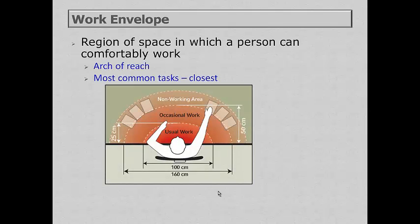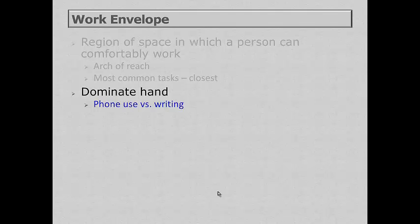Let's take a look at the work envelope — simply the region of space in which a person can comfortably work. Note that it's an arc of reach, not a rectangle or square. In general, put the most common tasks closest to the individual. Consider what the dominant hand is — for example, if a person uses a phone, they'd probably want to use it with their opposite hand so they can also perform writing tasks while on the phone. If the phone is on the same side as the dominant hand but has a long enough cord to reach the non-dominant hand, the only problem might be that the cord covers some workspace.